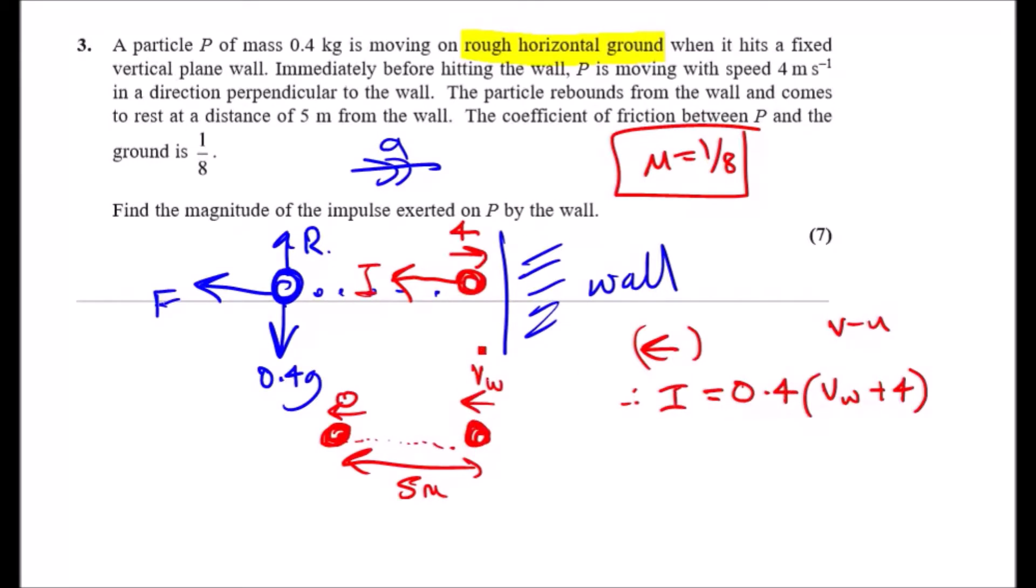Now, before we get here, we should also consider the acceleration, the deceleration because we know that the speed will slow down to 0. Now, how to get that? All we can really do here is simply try resolving the general particle forces. So, let's look at the particle. Let's go ahead and resolve upwards from the particle. If we do that, we can just say R equals 0.4 G. Why? Because there's no acceleration. It's perpendicular to acceleration, so it's going to be 0. So, that's R done.